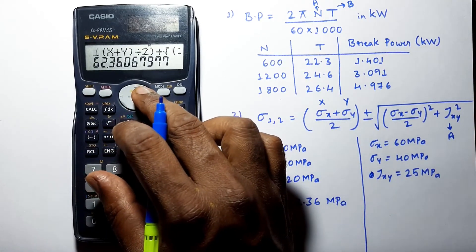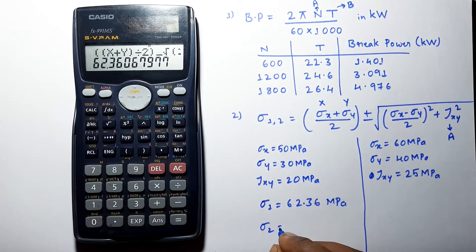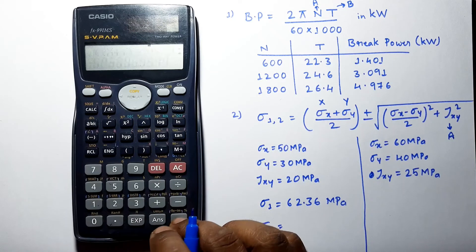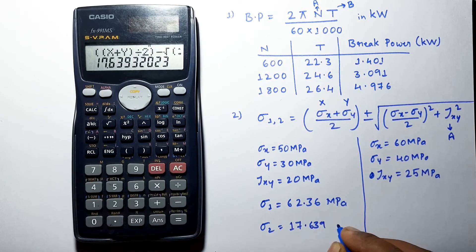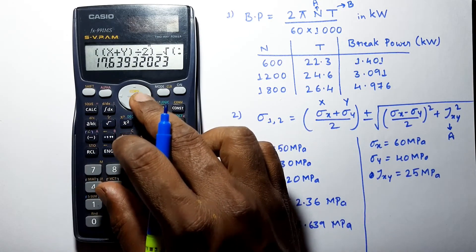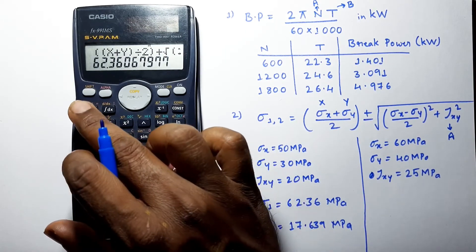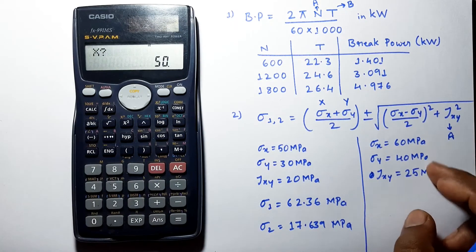Press equals and we get the answer sigma 1 equal to 62.36 MPa. Now to get the value of sigma 2, replace the plus sign with minus. We get the value of 17.63 MPa. Now let's find out sigma 1 and sigma 2 for different sigma x and sigma y values.